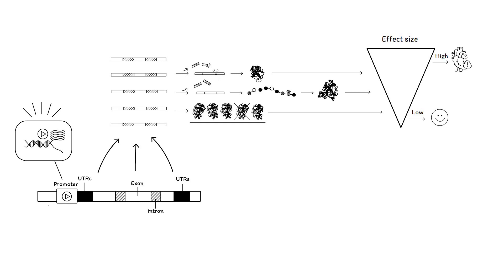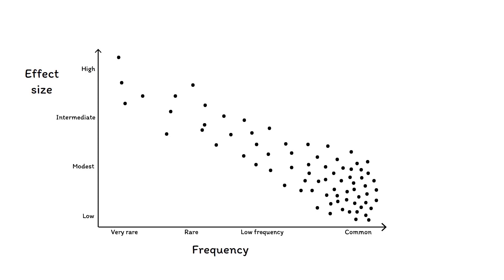Fortunately, we carry more variants with smaller effects than harmful genetic variants with big effect sizes. If we plot all genetic variants based on their effect size and the frequency in which they are encountered in the general population, we can roughly observe a negative relationship between them.